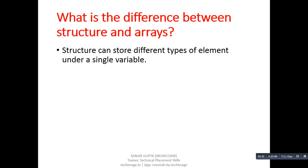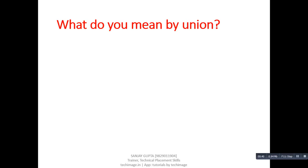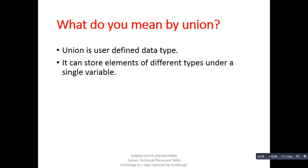Next question: what is the difference between structure and arrays? A structure can store different types of elements under a single variable, whereas an array can store similar types of elements under a single variable. Next question: what do you mean by a union? A union is a user-defined data type.